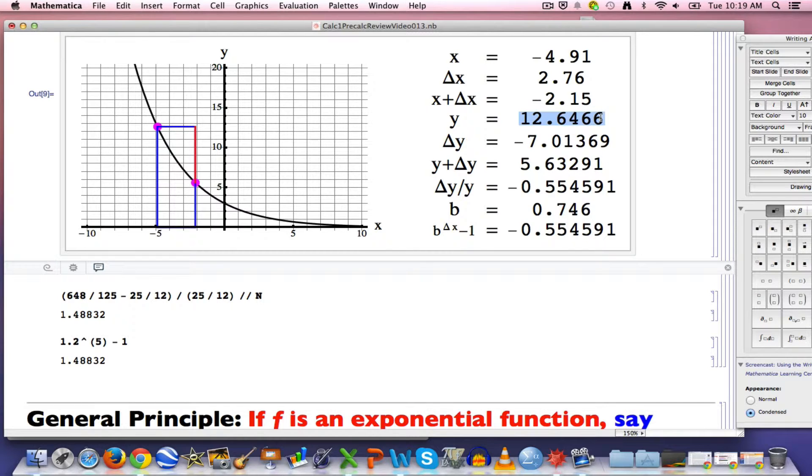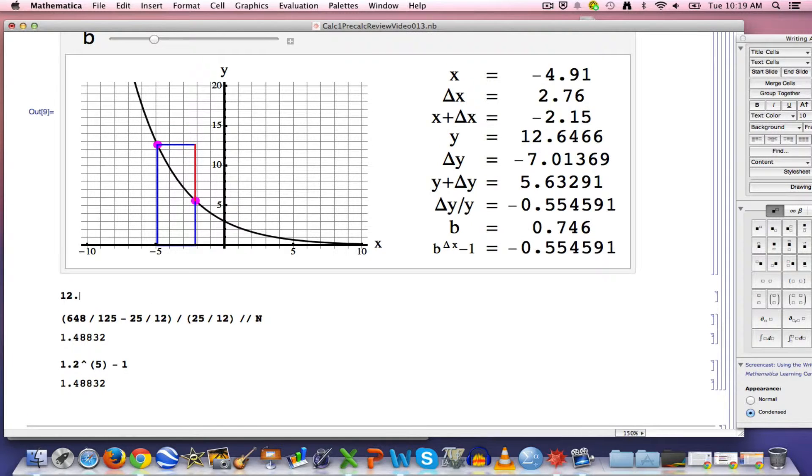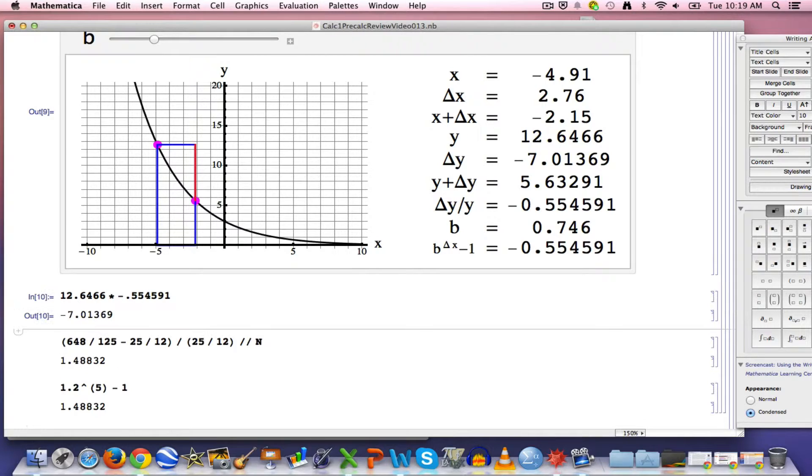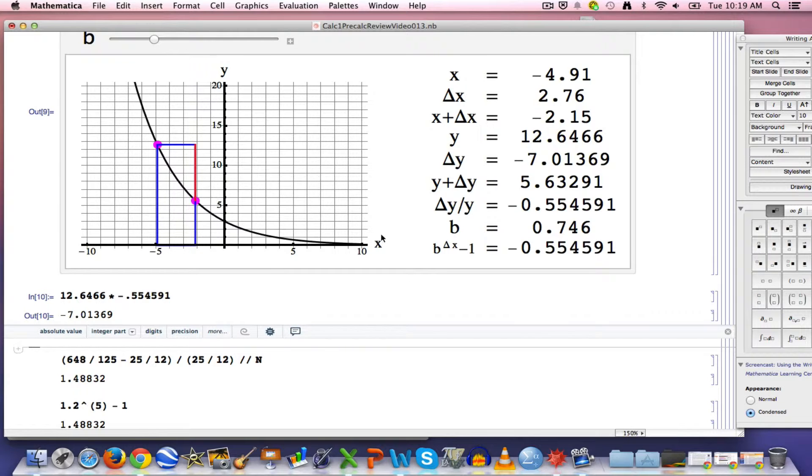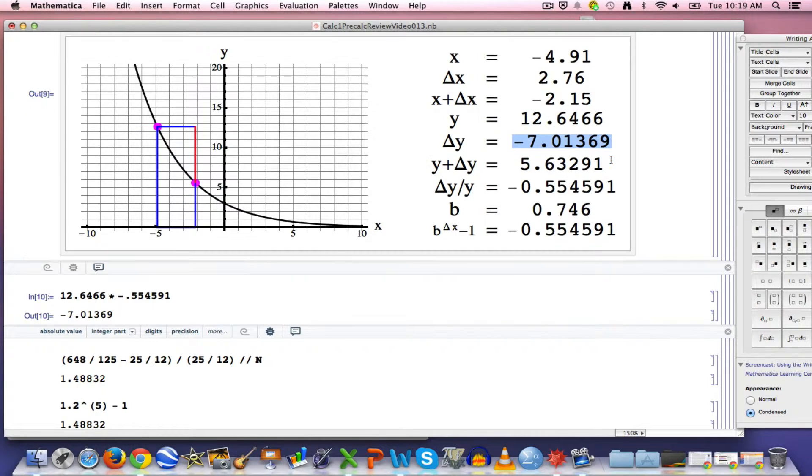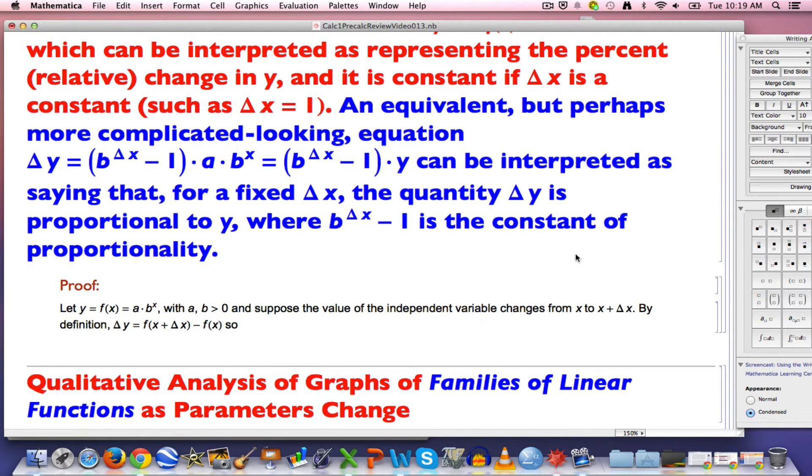12.6466, let's go ahead and confirm it with Mathematica here, 12.6466 times negative 0.554591 should be negative 7 approximately. Yes, negative 7.01369. We're getting that quantity right there. That's illustrating the proportionality.